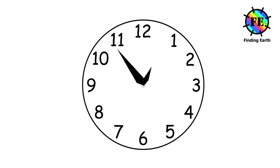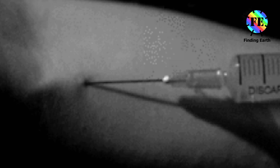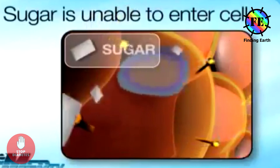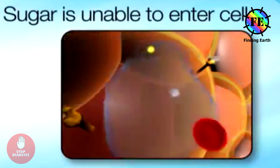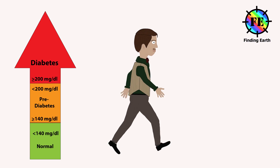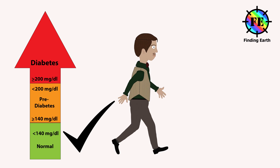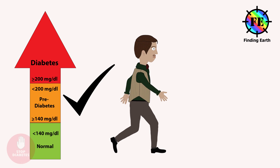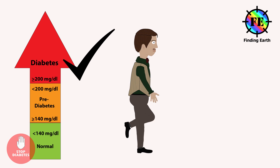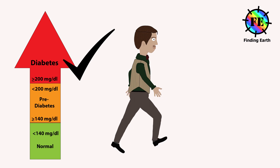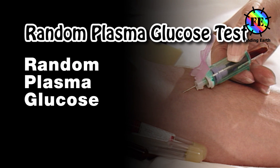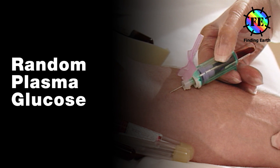The Oral Glucose Tolerance Test (OGTT) is a two-hour test that checks your blood glucose levels before and two hours after you drink a special sweet drink. It tells the doctor how your body processes glucose. OGTT less than 140 mg/dL is normal; 140 to 199 mg/dL indicates pre-diabetes.